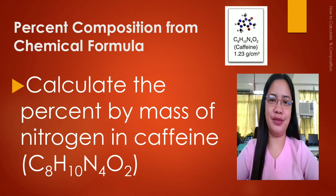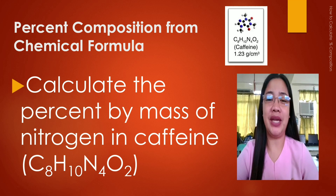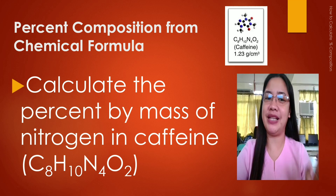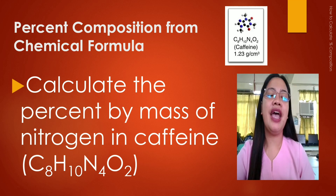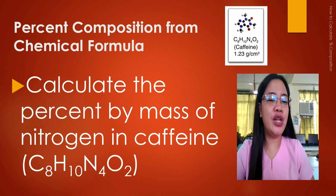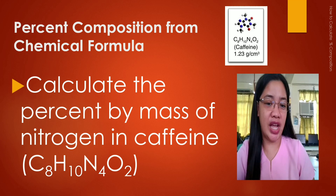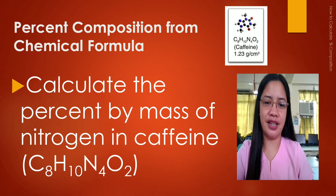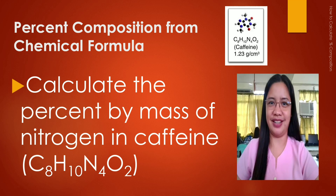Now let's try to solve a particular example of a compound. On the screen you have here percent composition from chemical formula. This is our problem: calculate the percent by mass of nitrogen in caffeine. We have this chemical formula composed of carbon, hydrogen, nitrogen, and oxygen.